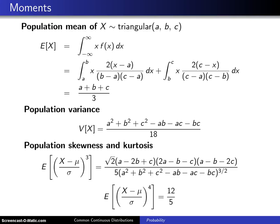This slide concerns the population moments of a triangular random variable X with parameters a, b, and c, where a is the minimum, b is the mode, and c is the maximum.